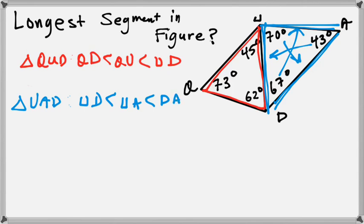So if you look at the line of reasoning here, you have some commonalities. UD appears twice. So we actually know how to rank the entire set of lengths all in one go, from least to greatest, the smallest length all the way up to the biggest length.